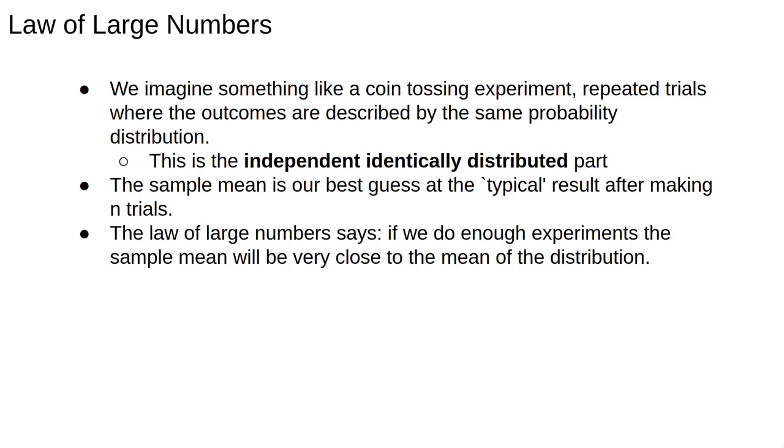The law of large numbers says that if we do enough experiments the sample mean will be very close to the mean of the distribution meaning that the average number of heads will be close to the expected number of heads.